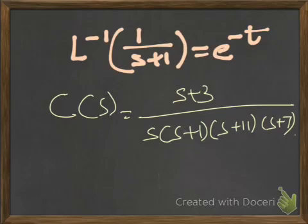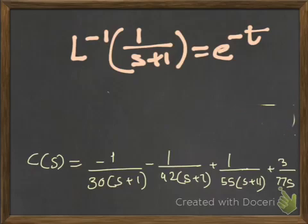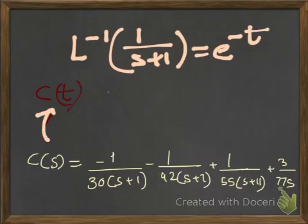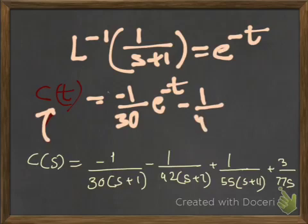Now resolve C(s) into partial fractions. By doing so, you get C(s) equal to −1/30 · 1/(s + 1) plus other partial fraction terms. Taking the inverse Laplace of each term: inverse Laplace of −1/30 · 1/(s + 1) gives −(1/30)e^(−t), and similarly you get −(1/42)e^(−7t).